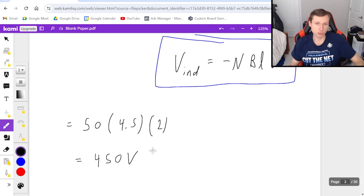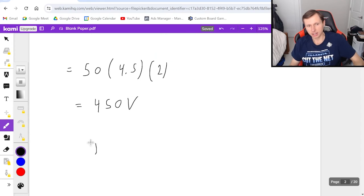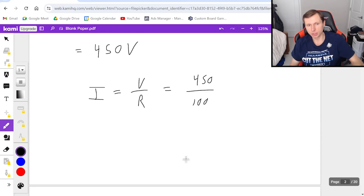And that's the voltage, which I didn't want, I wanted the current. And current equals voltage divided by resistance from Ohm's law, which means it's going to be 450 divided by R is 100. So we'll get a current of 4.5, and the units are amps.